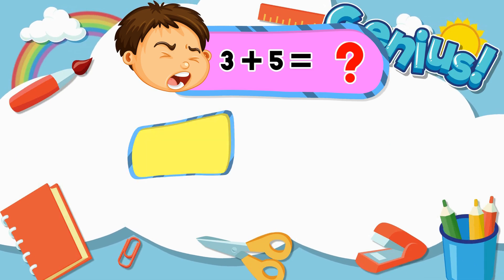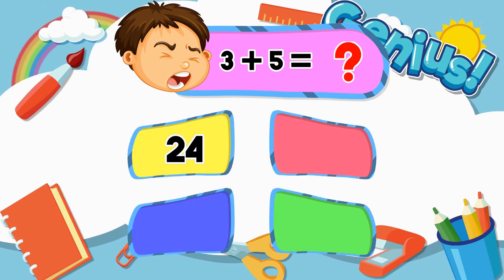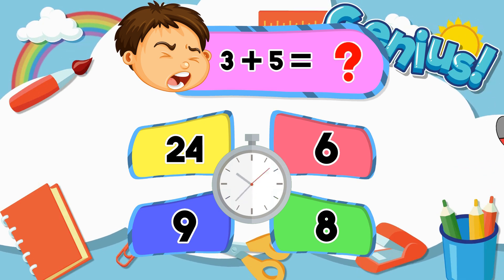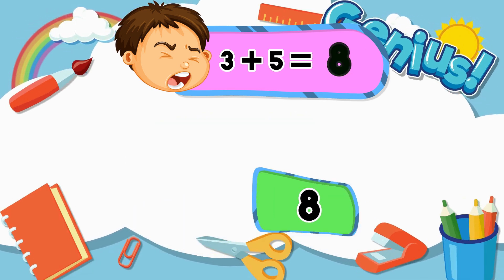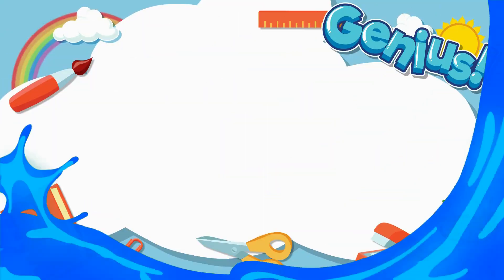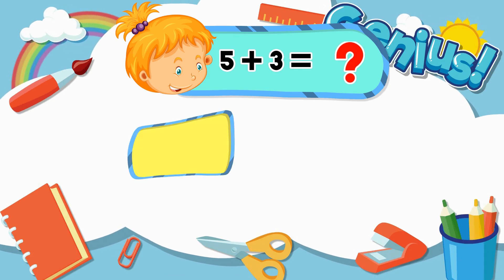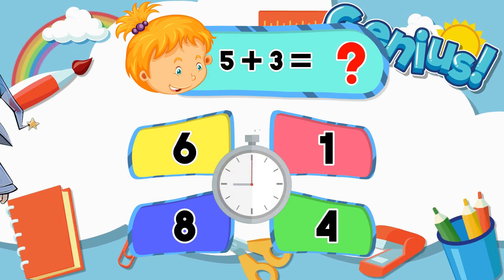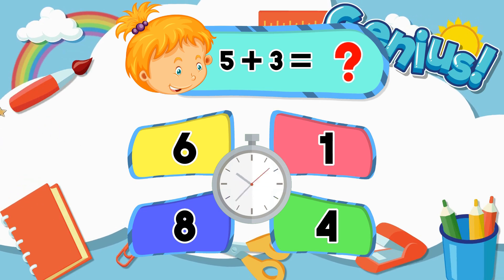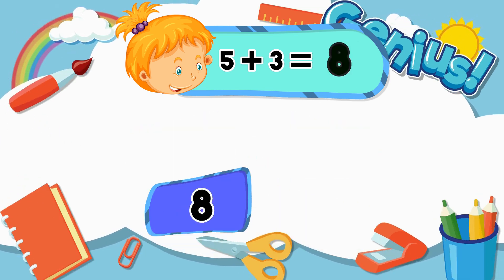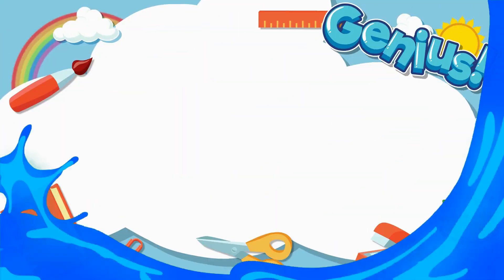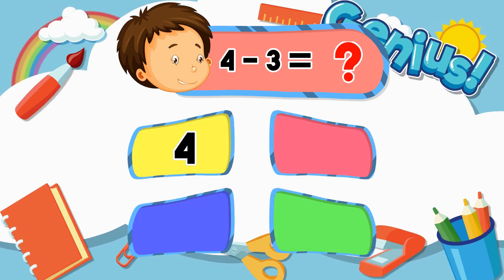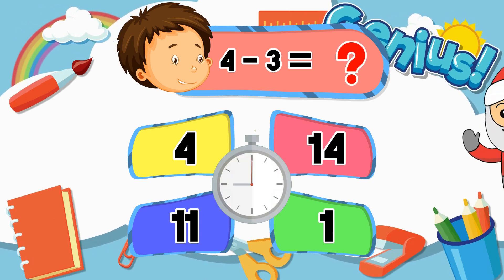16. What is 3 plus 5? 16, 17, 18. 18. 20, 21, 22, 23.